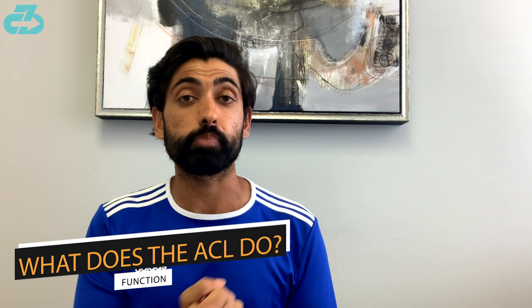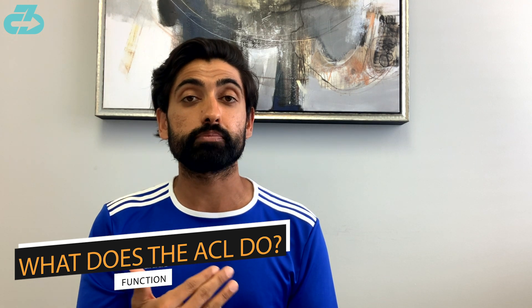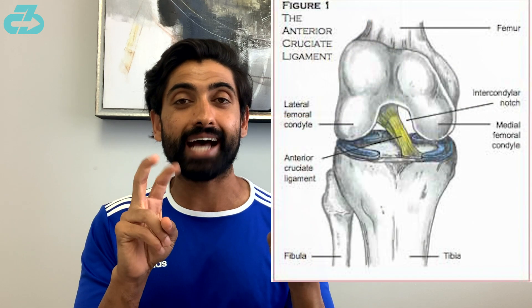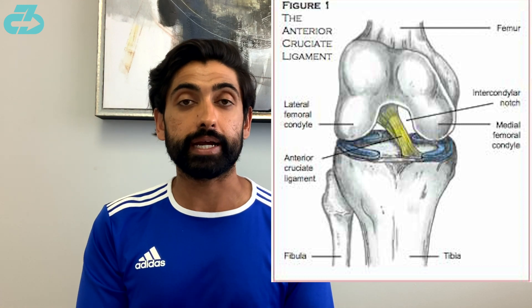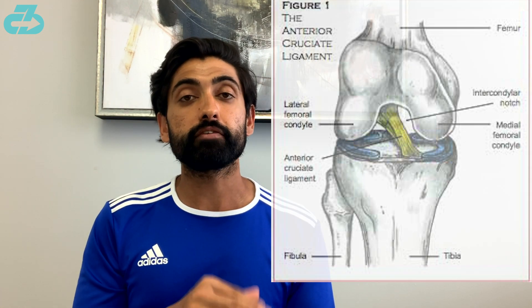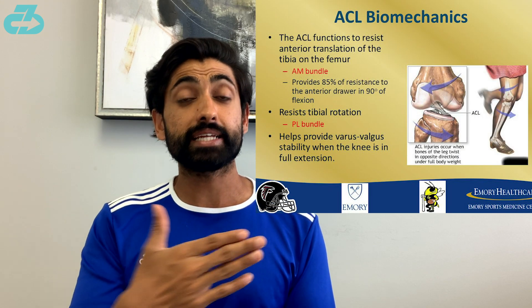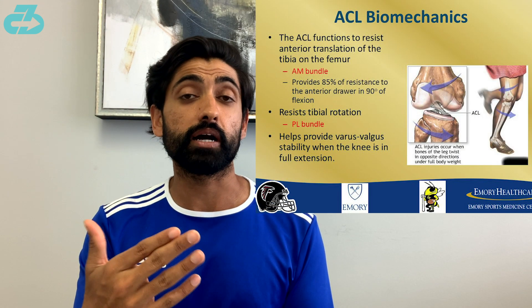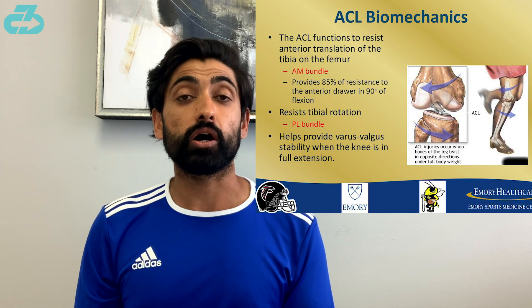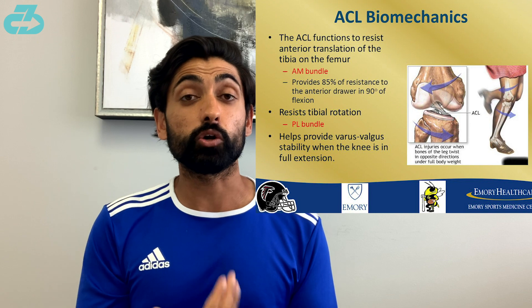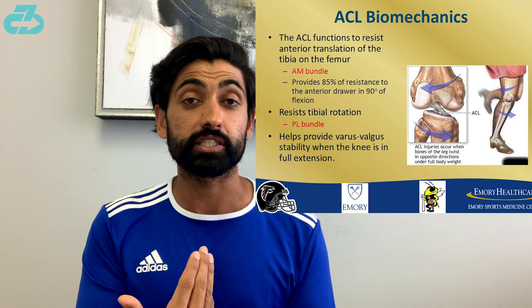Ligaments are almost like rubber bands that serve to keep the joint stable during certain movements. They are what's called passive constraints, meaning they don't actively contract like muscles. The main function of the ACL is to prevent significant anterior displacement of the tibia — meaning forward movement of the shin bone — and also medial internal rotation of the tibia.